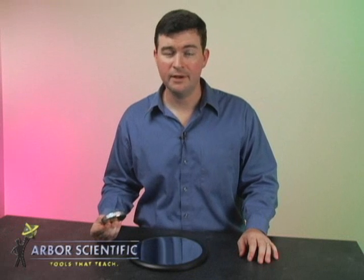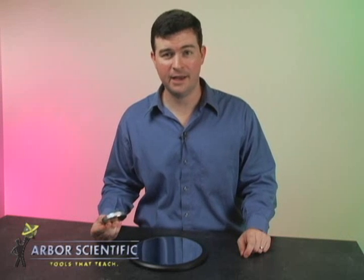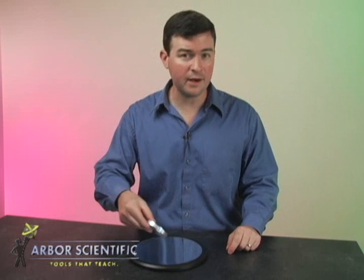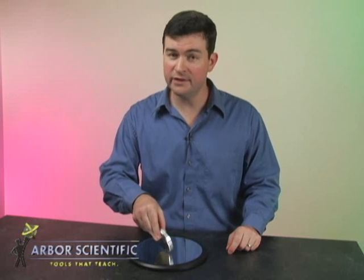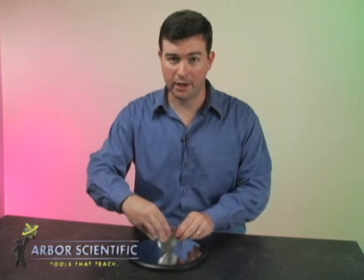When Euler's disk is spun, it has both potential and kinetic energy. The disk has potential energy when set upright on its edge. The disk is given kinetic energy when spun on its mirrored base.